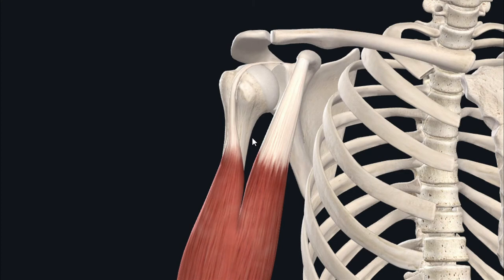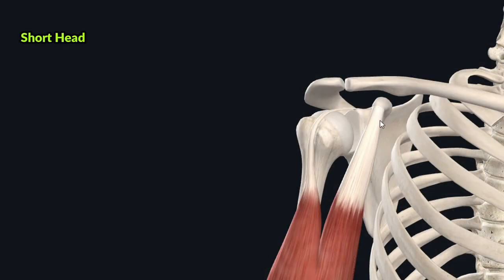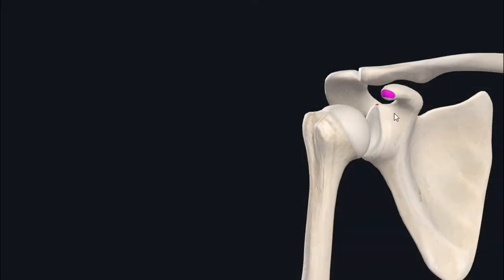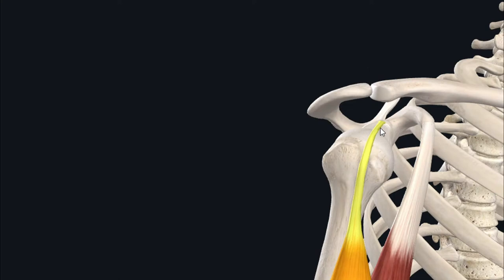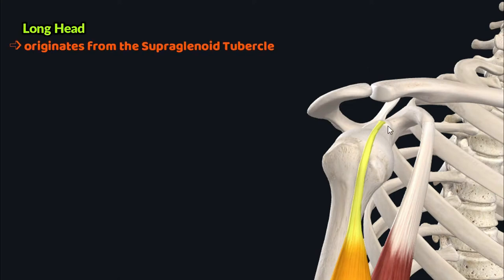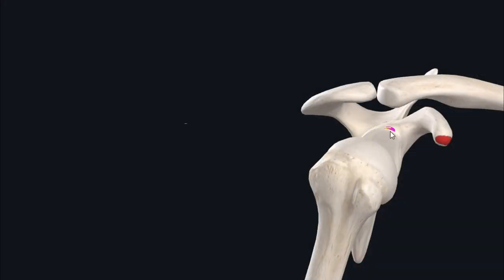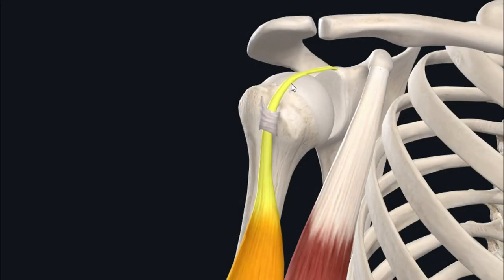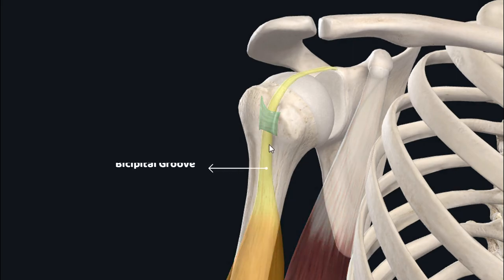This muscle has two heads of origin — the long head and the short head — which originate from different anatomical structures on the scapula. The short head of the biceps brachii originates from the coracoid process of the scapula, which is an anterior projection off the lateral angle. The long head originates from the supraglenoid tubercle and runs underneath the transverse humeral ligament, held in place within the bicipital groove of the humerus.